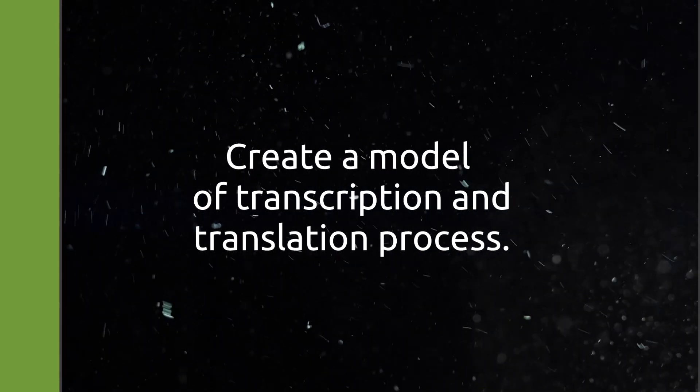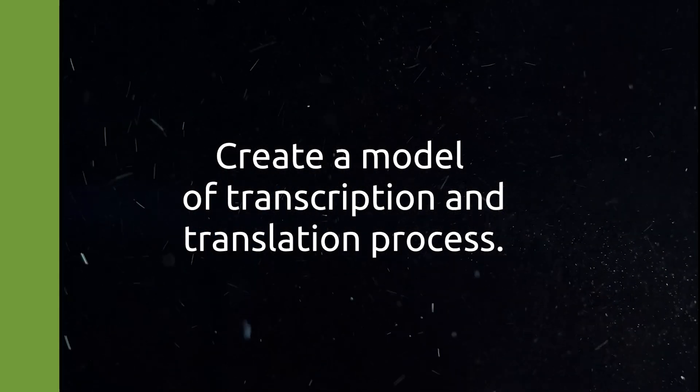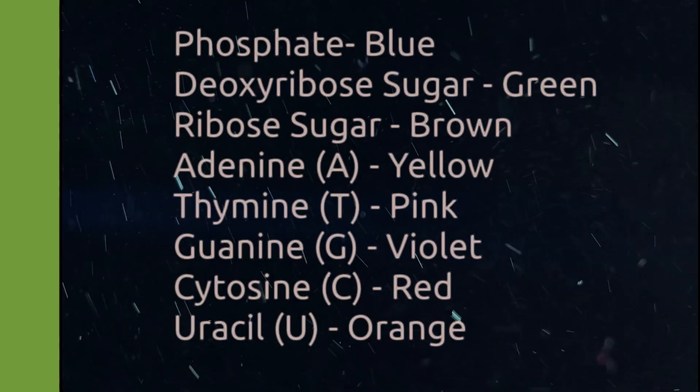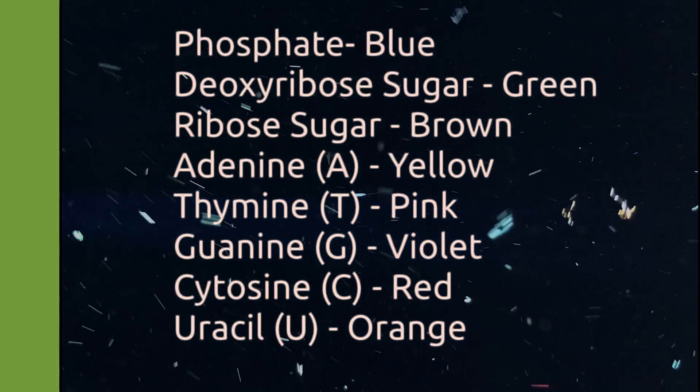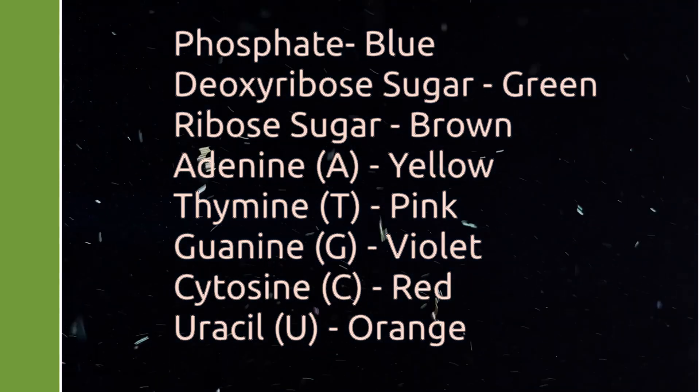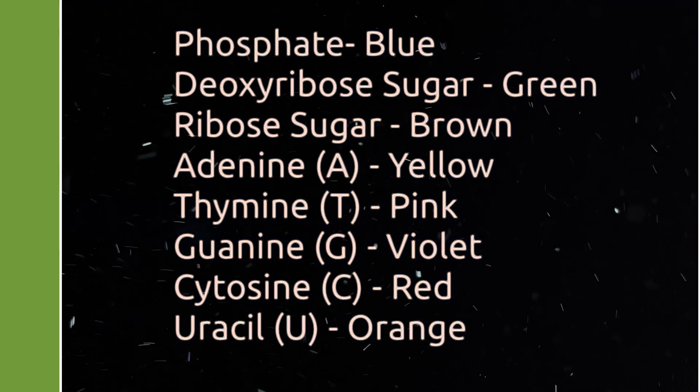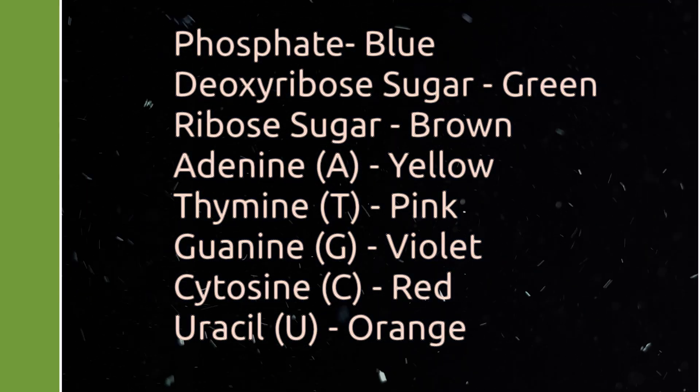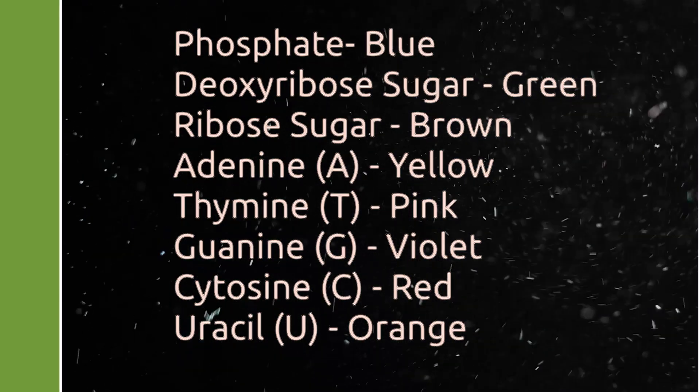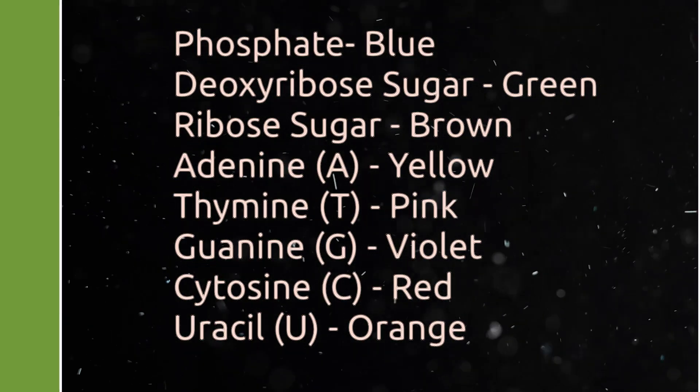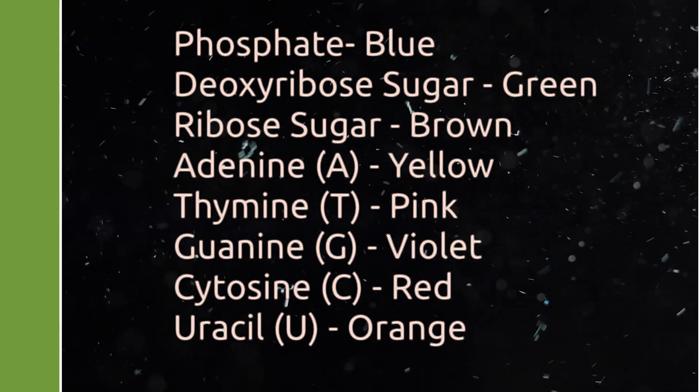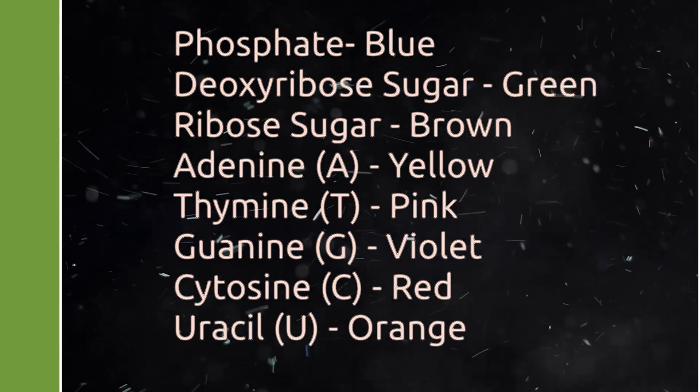Use the color codes given in the activity. For phosphate, blue; deoxyribose sugar, green; ribose sugar, brown. For the nitrogenous bases: adenine, yellow; thymine, pink; guanine, violet; cytosine, red; and uracil, orange.